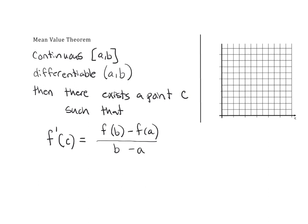What this is saying — if you take the average rate of change from this interval, and the function is continuous and differentiable, then at some point there will be an instantaneous rate of change that will equal this average rate of change.